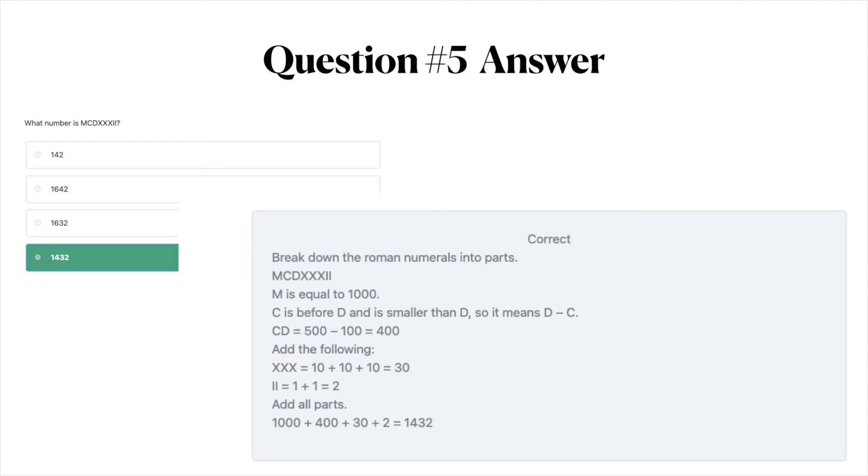Then you'll add the following. The three X's in a row are each X is equal to 10. So it's 10 plus 10 plus 10 equals 30. The two I's together, each I equals 1. So 1 plus 1 equals 2. And then finally you add all of those parts. So 1000 plus 400 plus 30 plus 2 equals 1432.